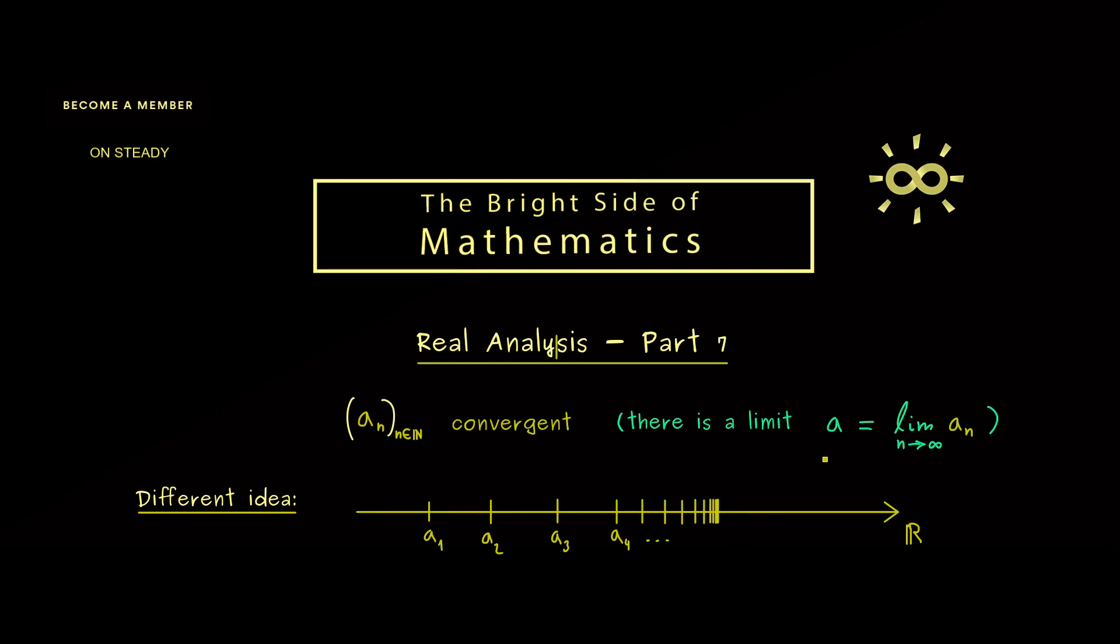However we don't want to use this limit to describe what happens here. Indeed what happens here is that the sequence members themselves get closer and closer to each other. Hence what we want is that the sequence members lie arbitrarily close to each other eventually. So everything is about the distance you can measure between two sequence members here.